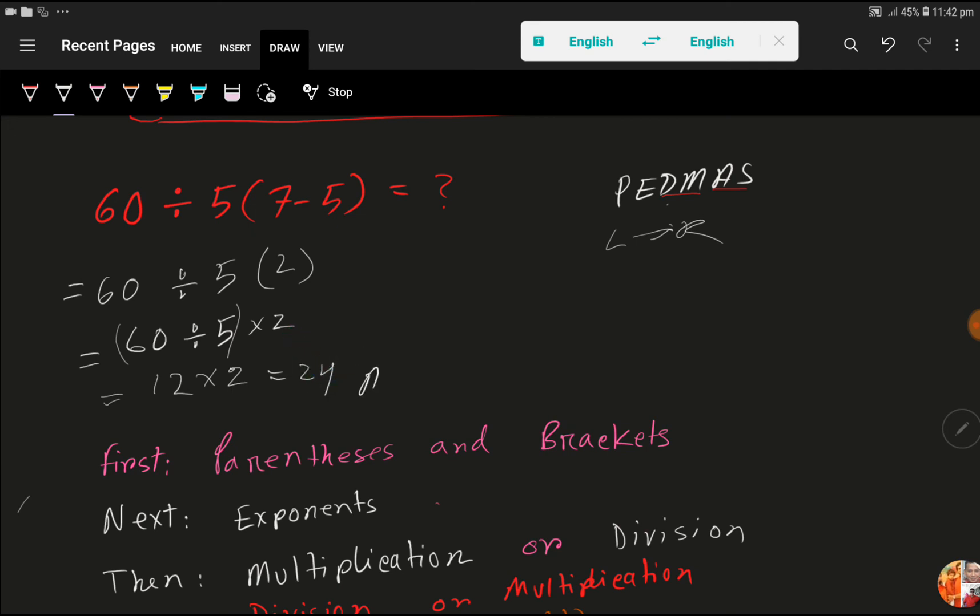But look, if you divide this 60 divided by 5 times 2, that is 10, then we'll get answer 6, which is wrong. So if you work from right to left, then you will get an incorrect answer. So the right answer is 24.